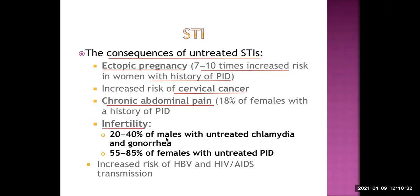20 to 40% of males with untreated chlamydia and gonorrhea, and 55 to 85% of females with untreated pelvic inflammatory disease, have infertility — meaning inability to conceive even after one year of unprotected sexual intercourse. Increased risk of hepatitis B virus and HIV/AIDS transmission is also a consequence of STI.